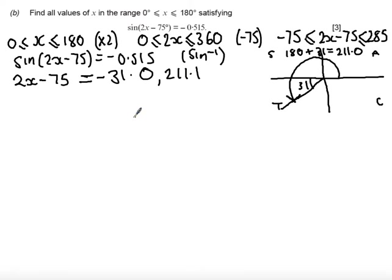You should check to see if you can get any further solutions. Once you've got your principal solution and your paired solution, you should add or subtract 360 degrees because it's the sine graph and it repeats every 360 degrees to see if any more angles lie in this range -75 to 285.